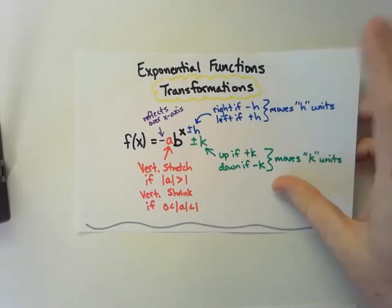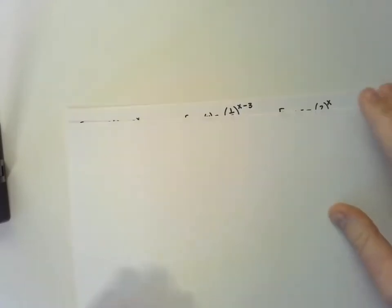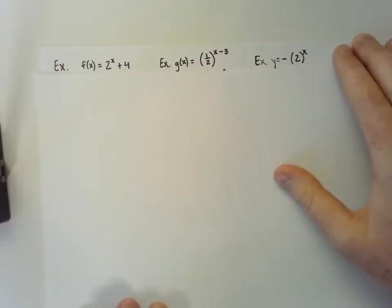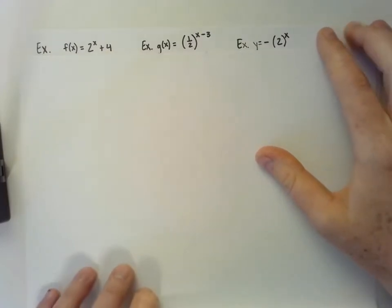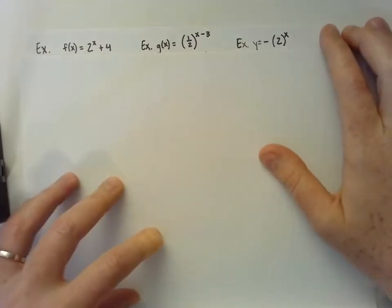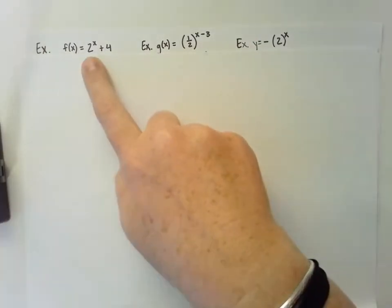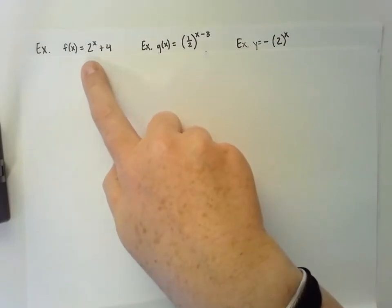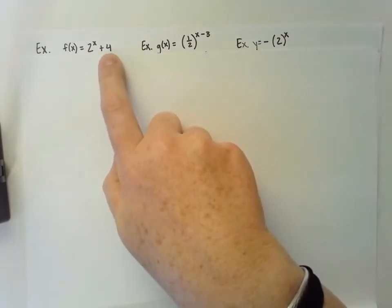Let's look at a couple of examples. I picked some that were pretty simple to start with. For example 1, we have a basic growth function—we can tell because the base is greater than 1—and then it shifted up 4.